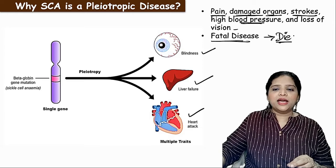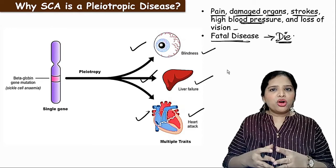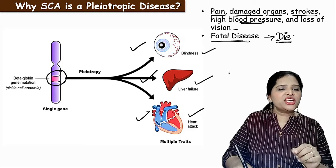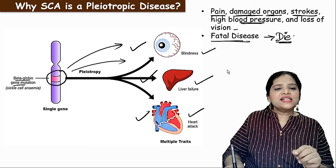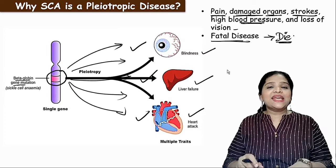Different conditions in the body are controlled by only one gene. If a single point mutation occurs in the beta globin gene, this mutation results in defects in different organs and different functions of the body. That is why one gene controls different characters in an organism — this is why sickle cell anemia is an example of pleiotrophism.